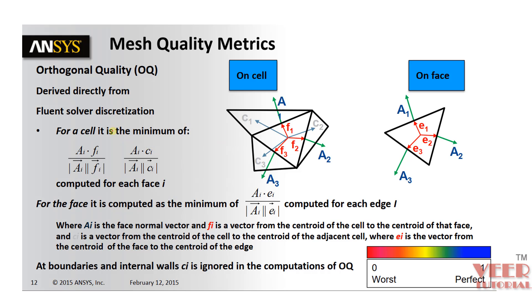For example, first we have mesh quality matrix that is called orthogonal quality. So orthogonal quality is calculated on a cell or on a face. So basically, it is going to take area vector or A1 onto all the three faces in three directions. We can see face normal and then Fi is a vector from the centroid of the cell.